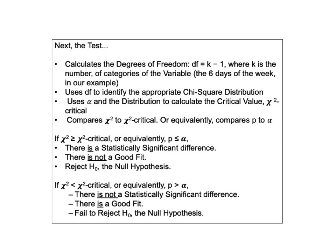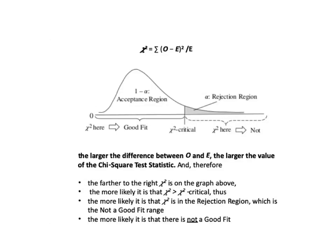If chi-squared is greater than chi-squared critical, or equivalently p is less than or equal to alpha, then there is a statistically significant difference and there is not a good fit. If chi-squared is not greater than chi-squared critical, there is no statistically significant difference — there is a good fit — and we fail to reject or accept the null hypothesis. The numerator, o minus e squared, in the test statistic formula makes it clear why the larger the difference between o and e, the larger the value of the chi-squared test statistic.